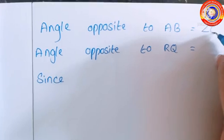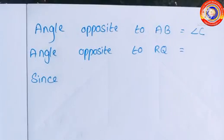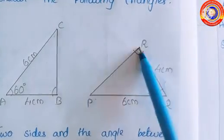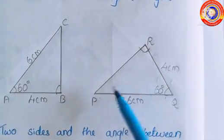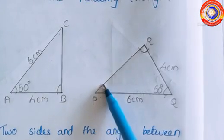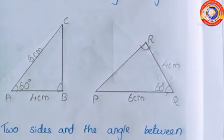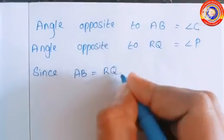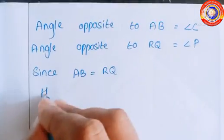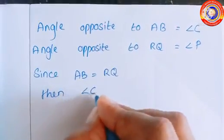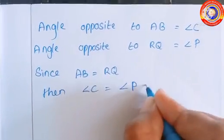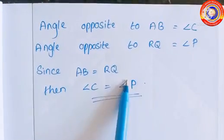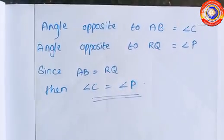Next, the angle opposite to AB is angle C, and the angle opposite to QR is angle P. Since the third sides of both the triangles are equal, their angles are also equal, that is angle C is equal to angle P.